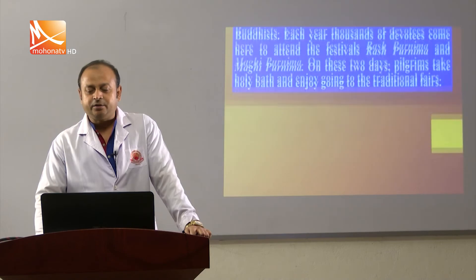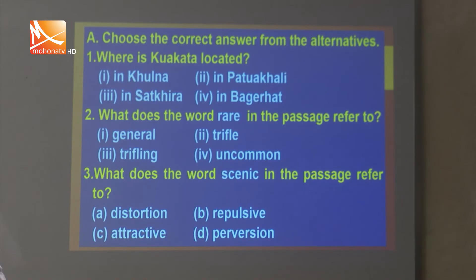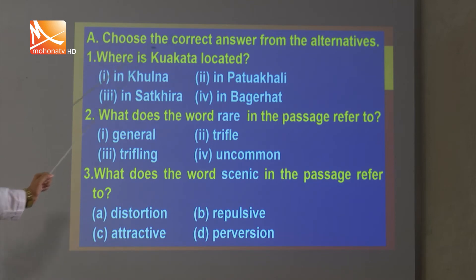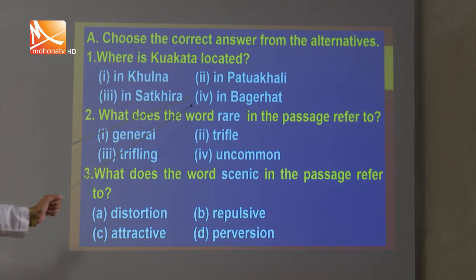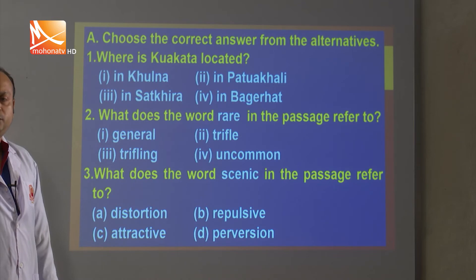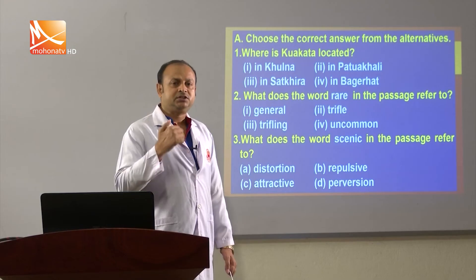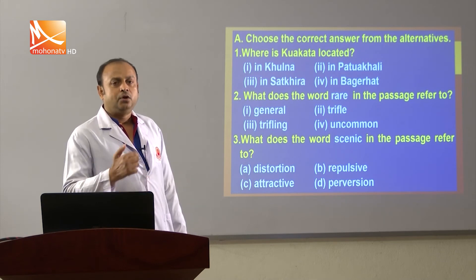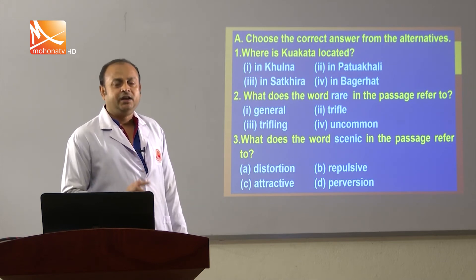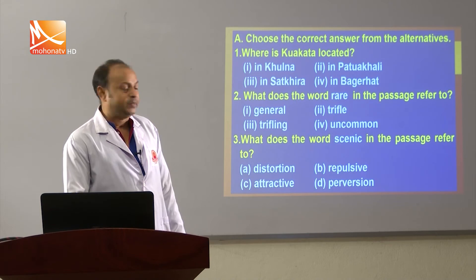Now let us see the MCQ options. Choose the correct answer from the alternatives. The alternatives are numbered 1, 2, 3, 4. We have to write only the correct option number in our answer script.